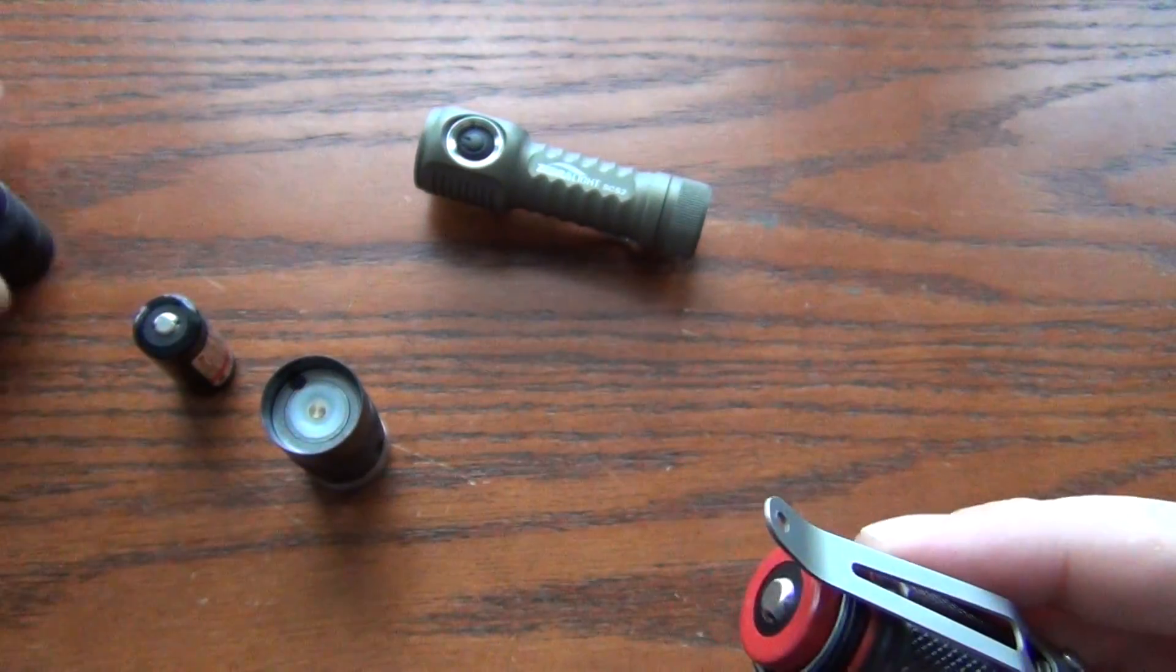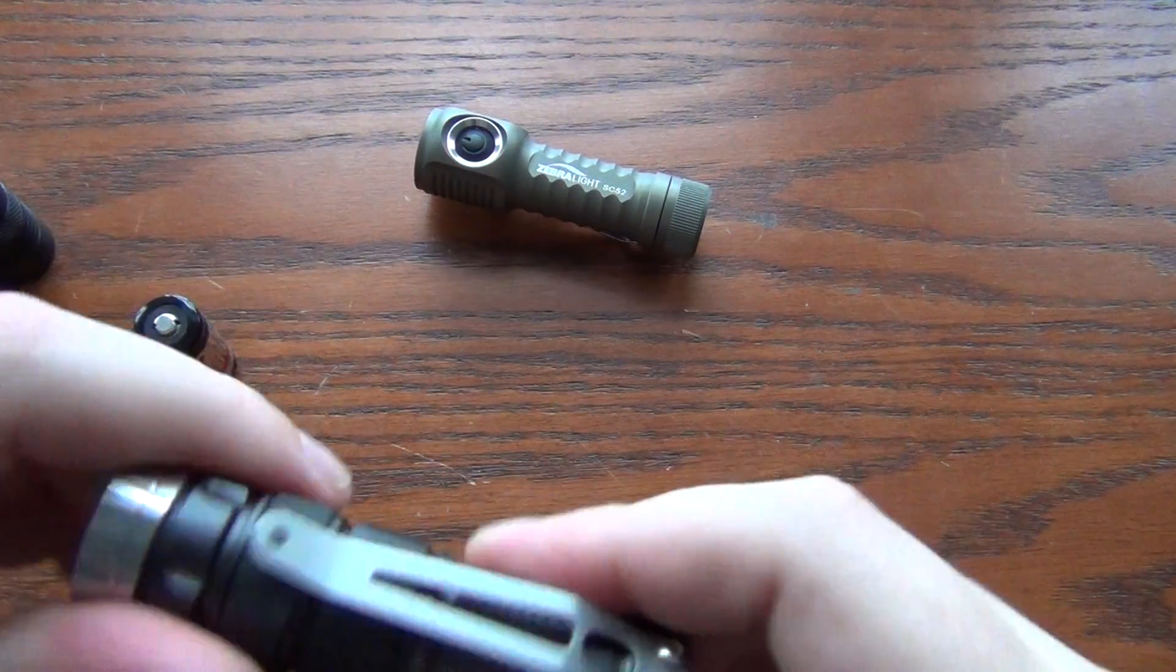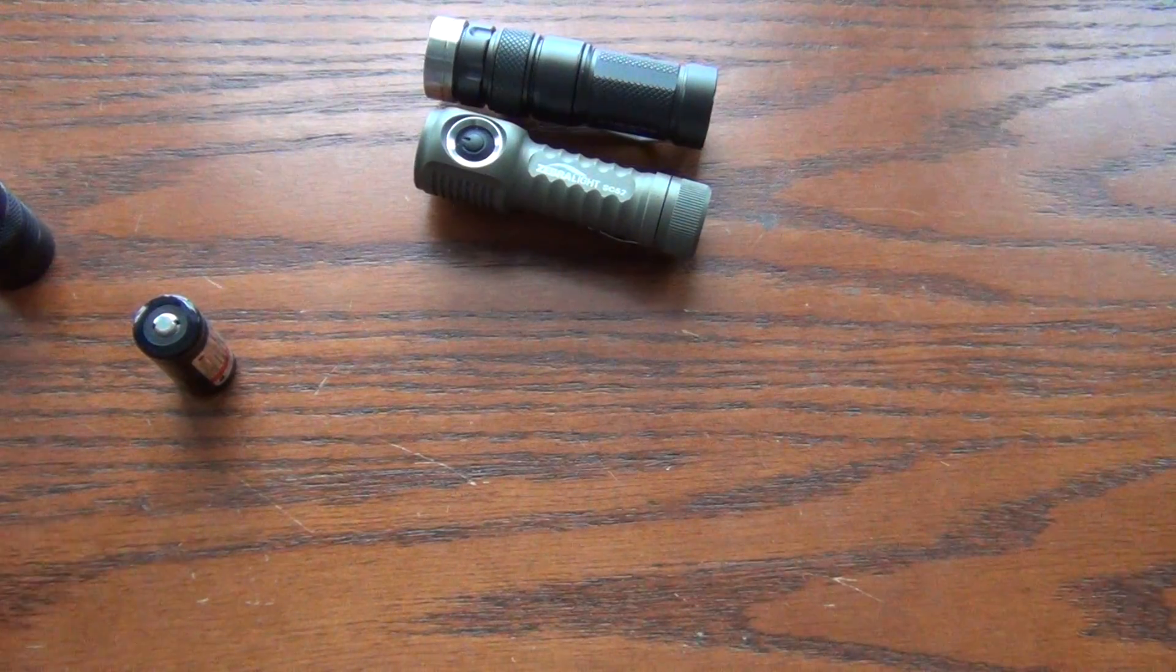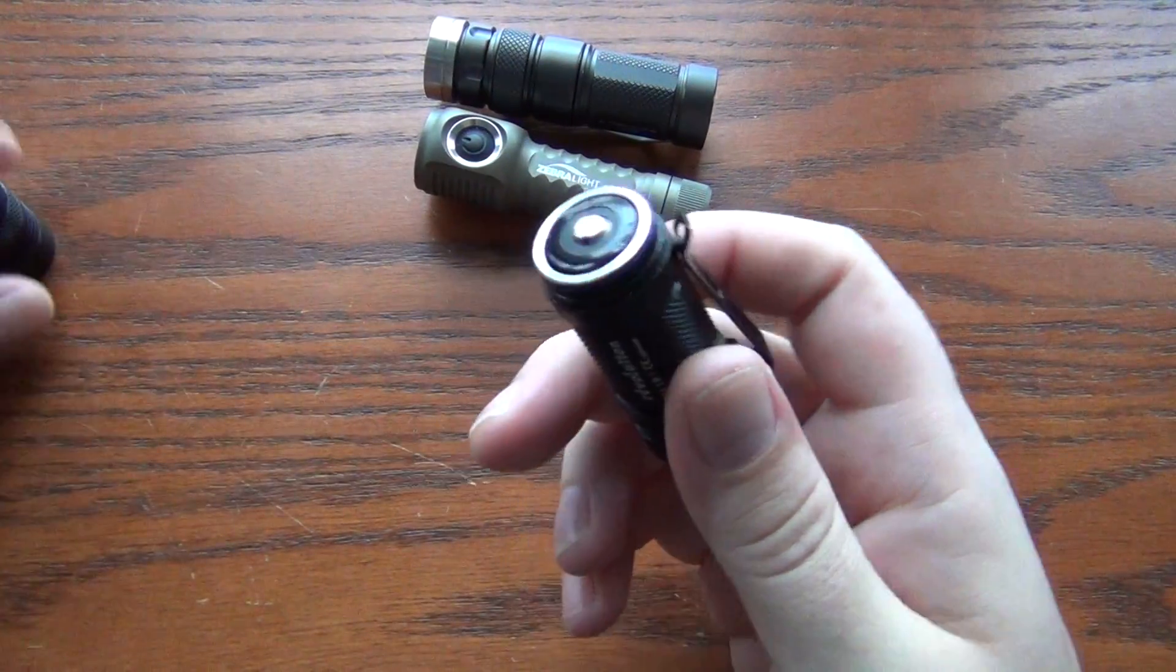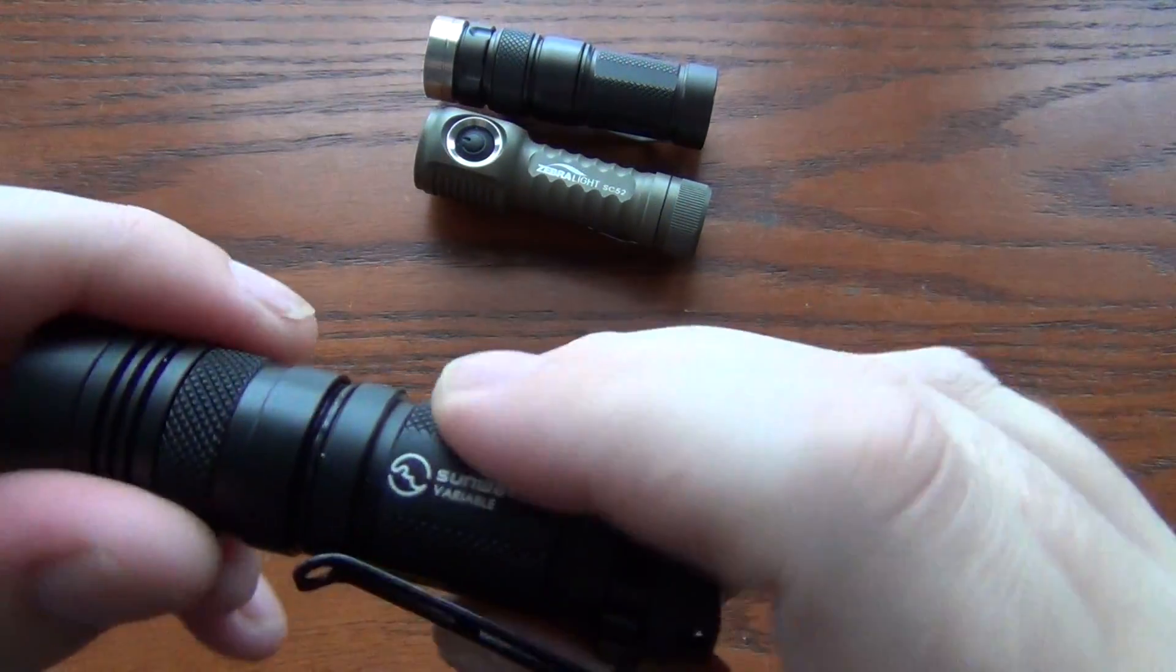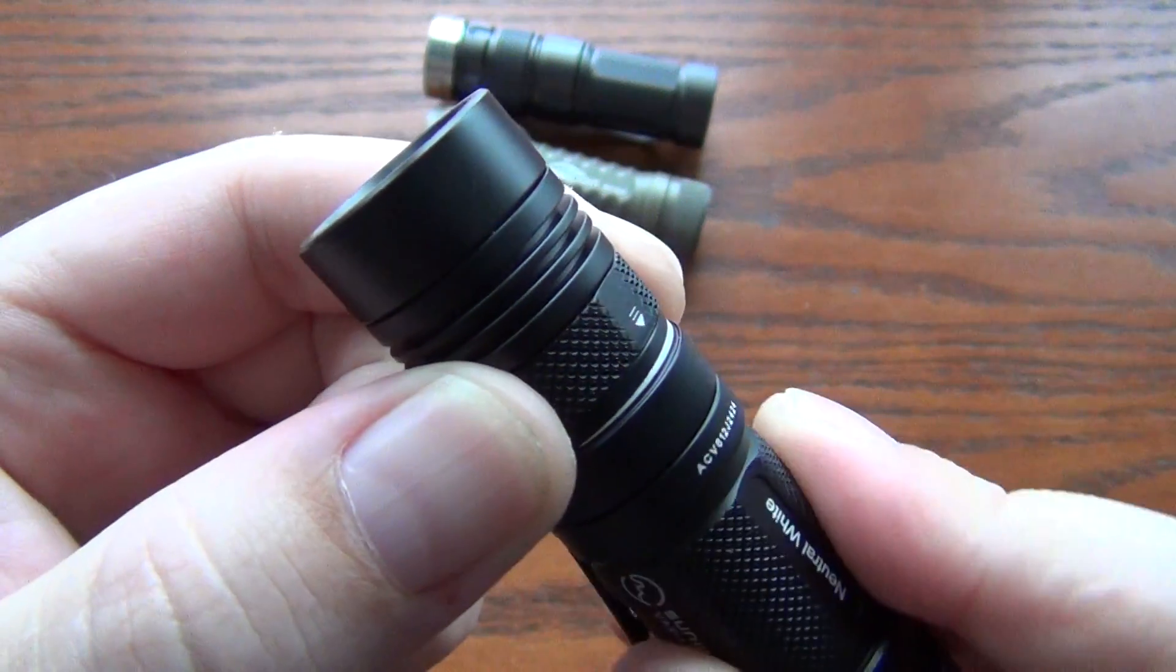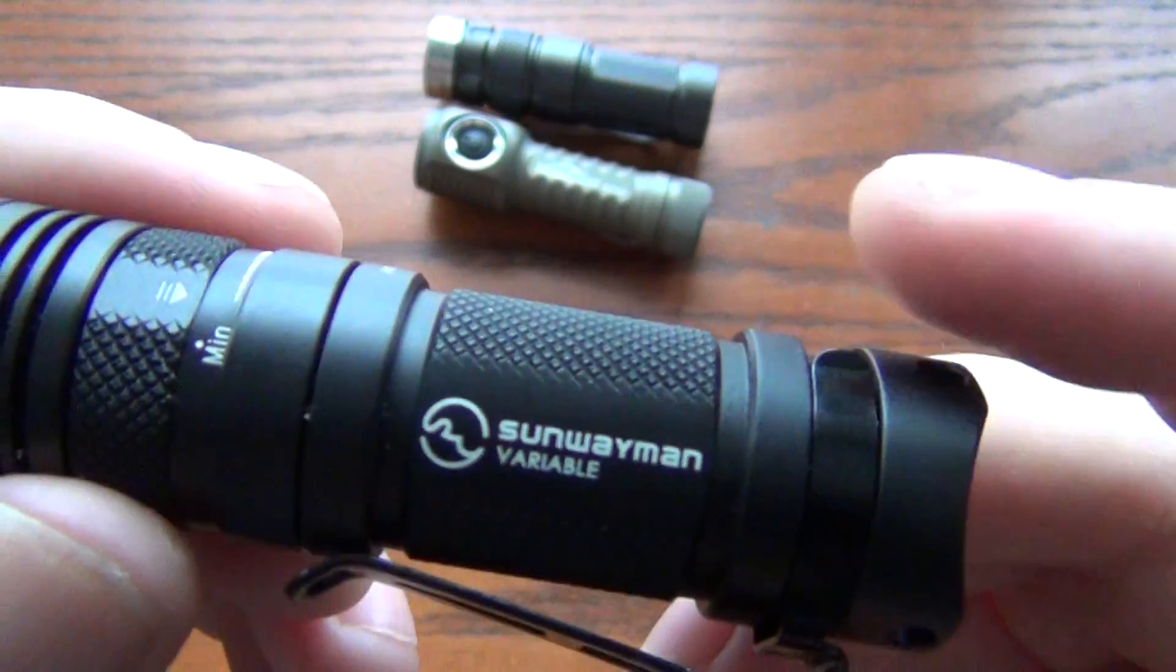Oops. Putting the wrong head on the wrong body. And then another competitor would be this. This is a Sunwayman. Again uses the variable control ring.